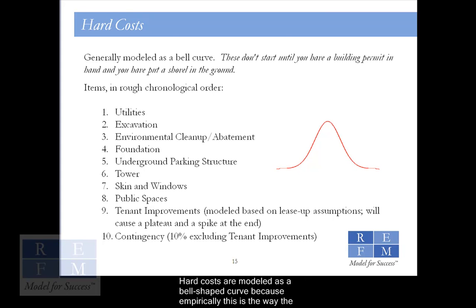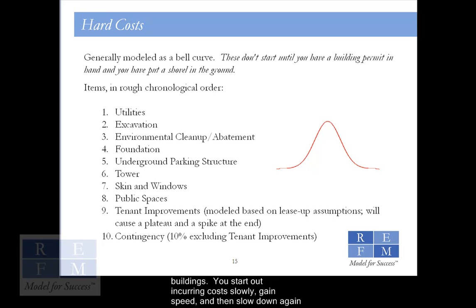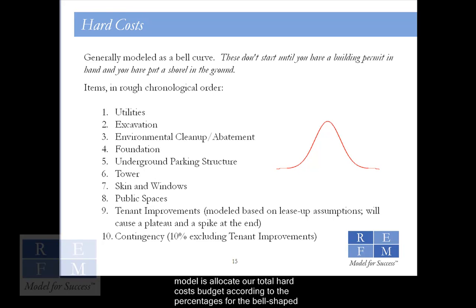Hard costs are modeled as a bell-shaped curve because, empirically, this is the way the construction budget is spent over the course of the construction schedule for buildings. You start out incurring costs slowly, gain speed, and then slow down again at the end. As a result, what we do in our model is allocate our total hard cost budget according to the percentages for the bell-shaped curve that matches our construction schedule duration.